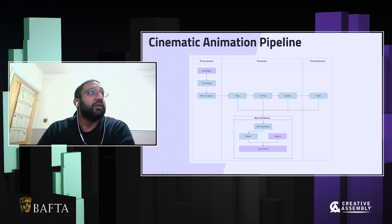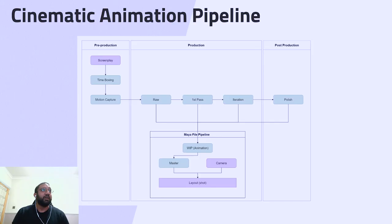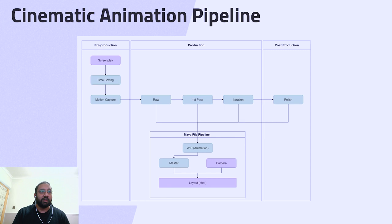Now I'll talk about the animation pipeline. When we start the trailer, we'll have a screenplay so that we can decide what's needed for the shots, what kind of character motion is needed, and we can time box that to decide what needs to be filmed. We have a motion capture pipeline — once we decide what's needed, and as you saw in the previous slides, you can see the live action tests we did. Once we make a decision on the shots we need, we go to the motion capture studio and start recording the takes we want.